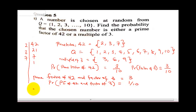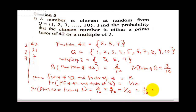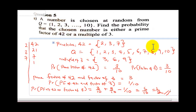From here, the probability of prime factor of 42 OR multiples of 3 is 3 over 10 plus 3 over 10 minus 1 over 10. That gives us 3 plus 3 minus 1, which is 5 over 10, simplifying to 1 over 2. So our final answer is 1 over 2.